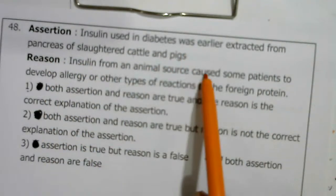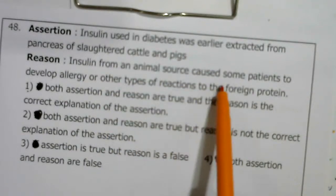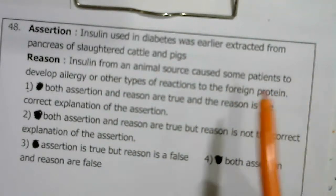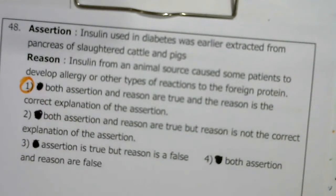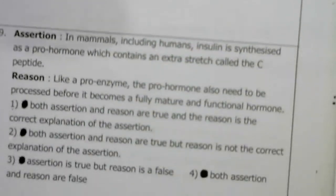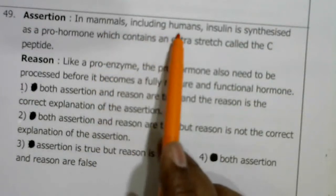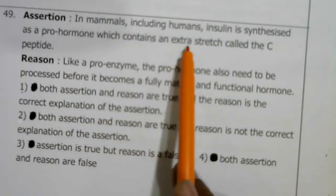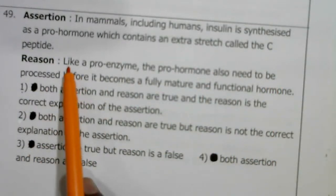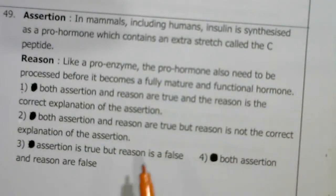Assertion-Reason: Insulin used in diabetes was earlier extracted from pancreas of slaughtered cattle and pigs. Reason: Insulin from animal source caused some patients to develop allergy or other reactions to the foreign protein. The reason is the correct explanation of the assertion — that's why recombinant DNA technology was used to produce humulin. So the first option is right.